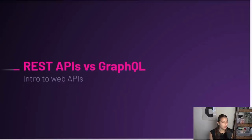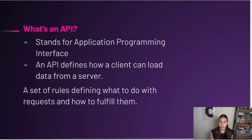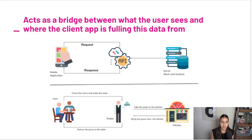Alright, so REST APIs versus GraphQL — intro to web APIs. What is an API? An API stands for application programming interface and it defines how a client application can load data from a server application. It's basically a set of rules defining what to do with requests and how to fulfill them. That might not make sense just yet but the next couple of slides will really help.